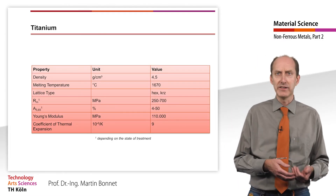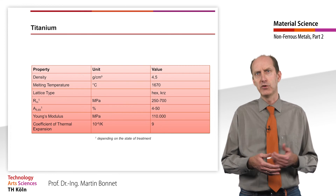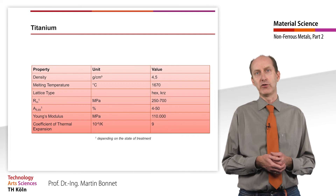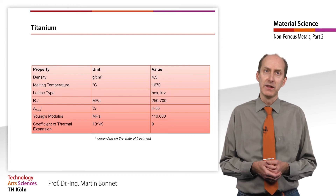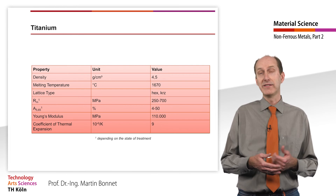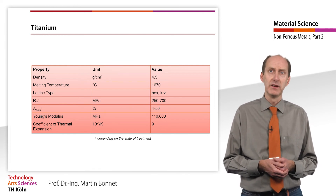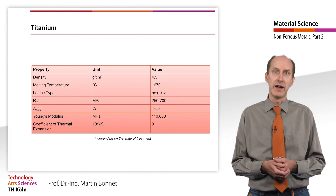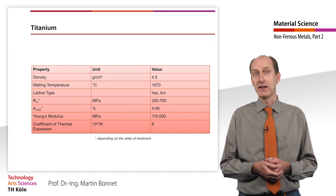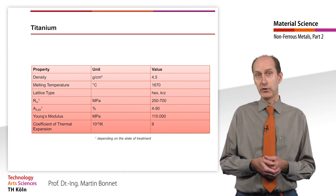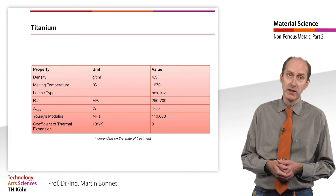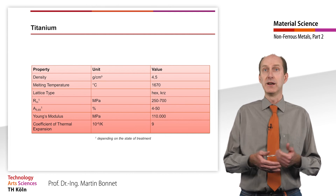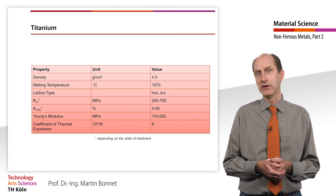In terms of strength, titanium materials are roughly equivalent to austenitic steels. In particular, the high 0.2% yield strength together with a relatively low density result in a weight saving of 42% when steel is substituted by titanium for the same strength. Significant advantages are therefore evident in applications with high acceleration forces, where lower centrifugal forces compared with steel allow smaller design layouts, leading to weight savings and a reduction in interior forces.